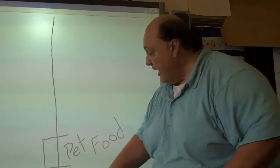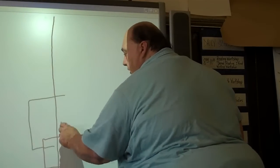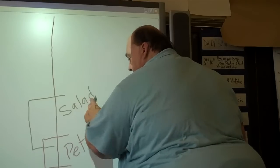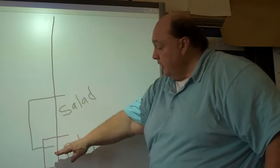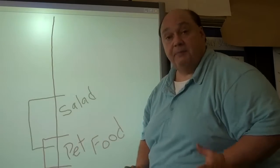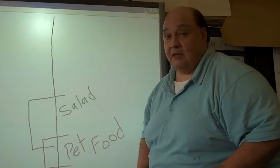Now, the next level that we have coming up is called the salad level. Now, salad, you know what it is, but you notice how it overlaps the pet category. That's because a lot of salad is not fit for human consumption.